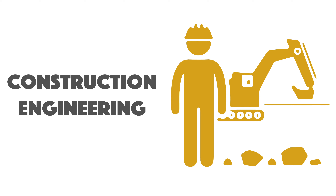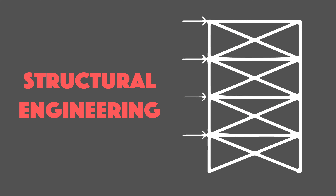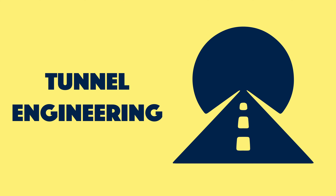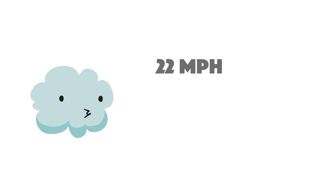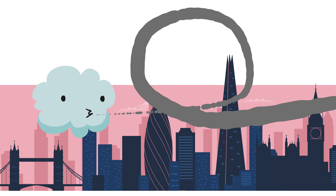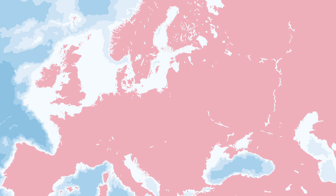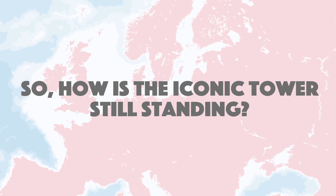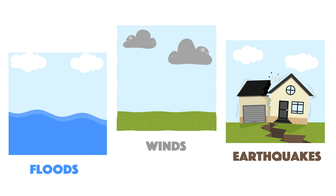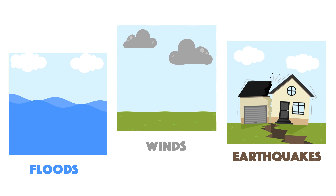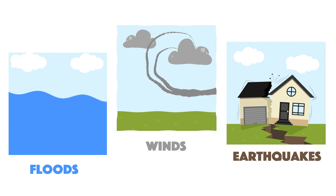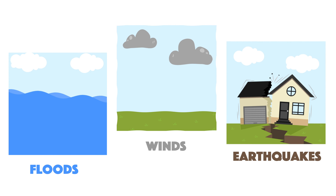Modern civil engineering is a broad field comprising various types of engineers, each specialising in different types of construction. Did you know gusts of 100mph have been recorded near the top of the Shard, the tallest building in Western Europe? So how is the iconic tower still standing? It's all down to the structural engineers, who analyse how such structures can hold up to environmental factors like floods, winds, and earthquakes.